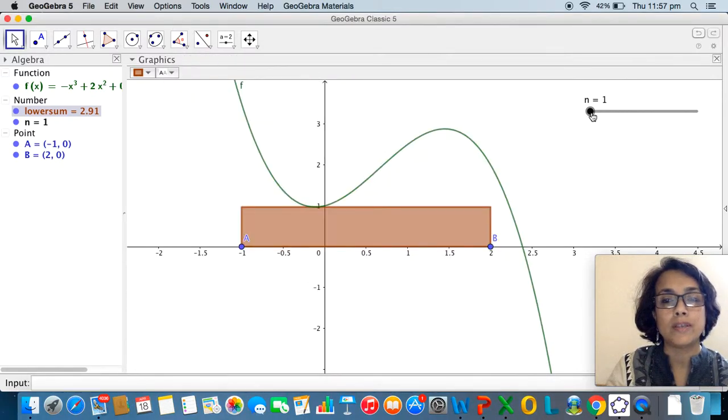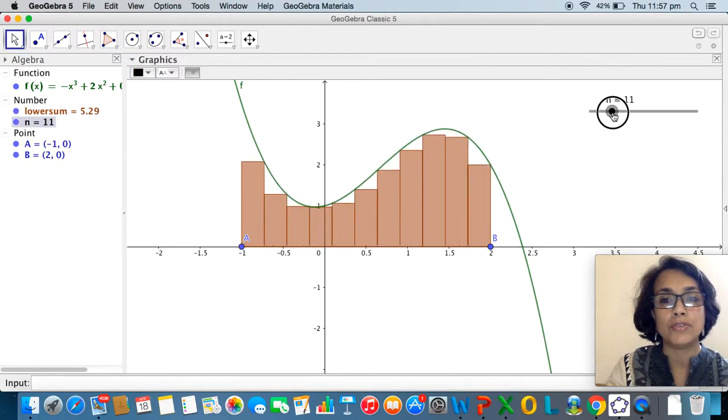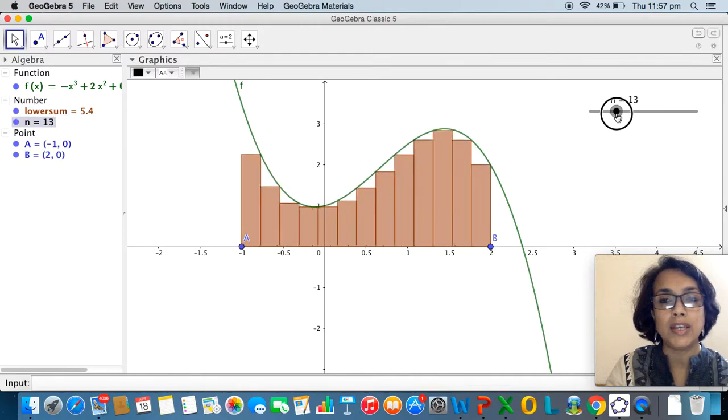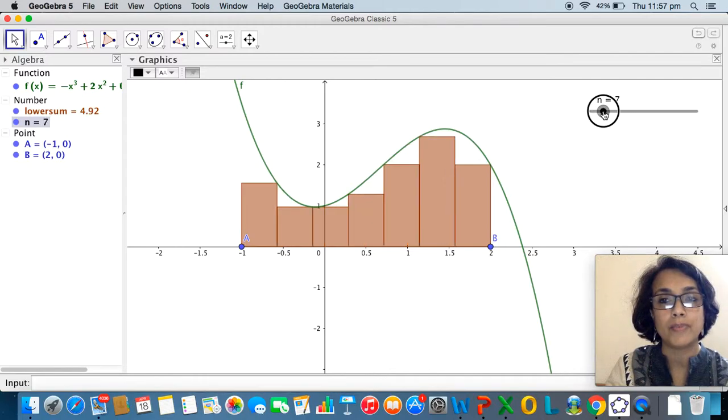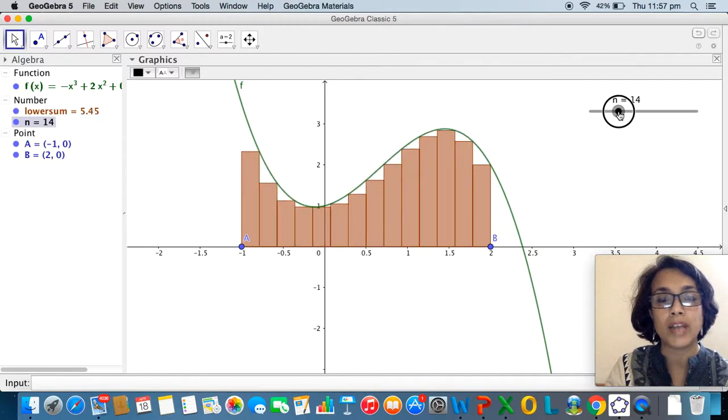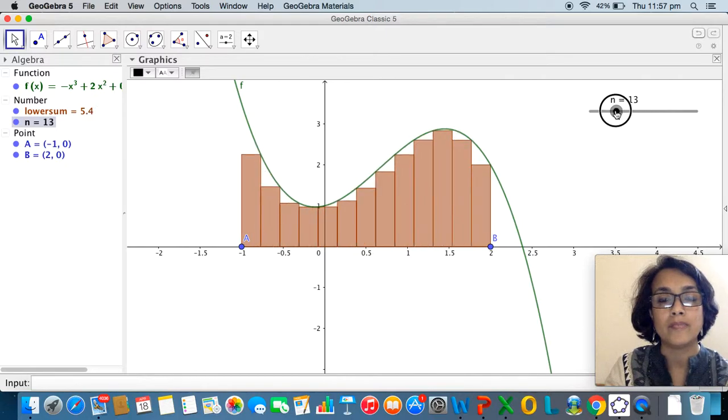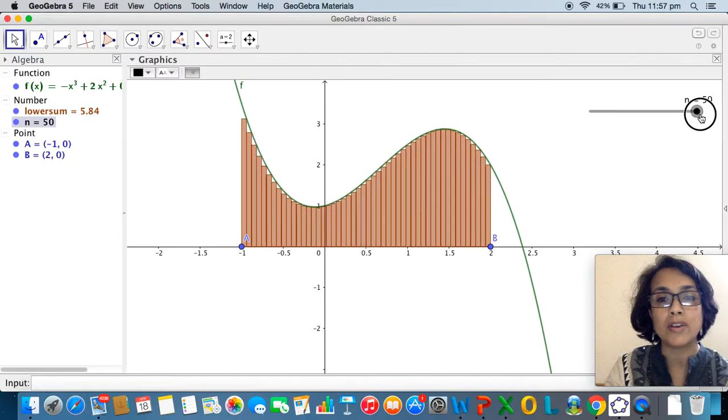So let us now see what the lower sums look like as n ranges from 1 to 50. You see that if you have lesser number of rectangles we get a very poor approximation of the area under the curve, but as you go on increasing the number of rectangles the approximation gets better and better. The wide spaces get filled up more and more and by the time we come to 50 we've almost covered the area under the curve.